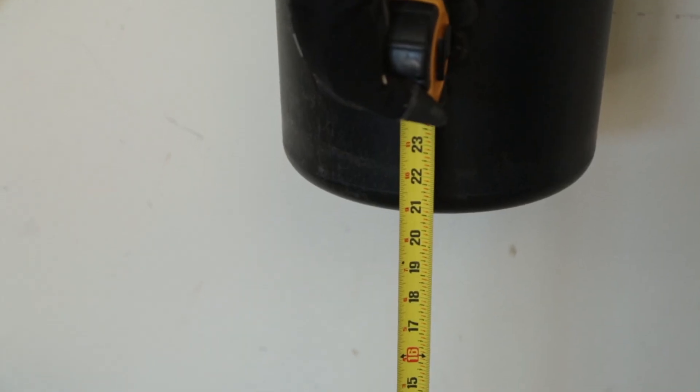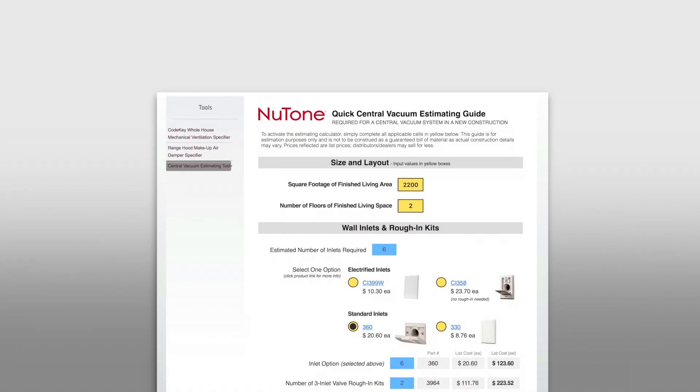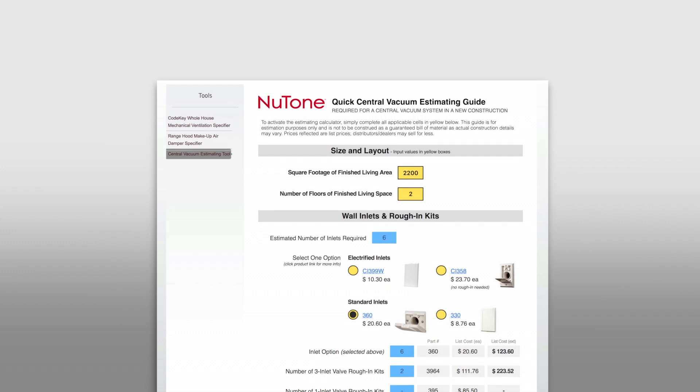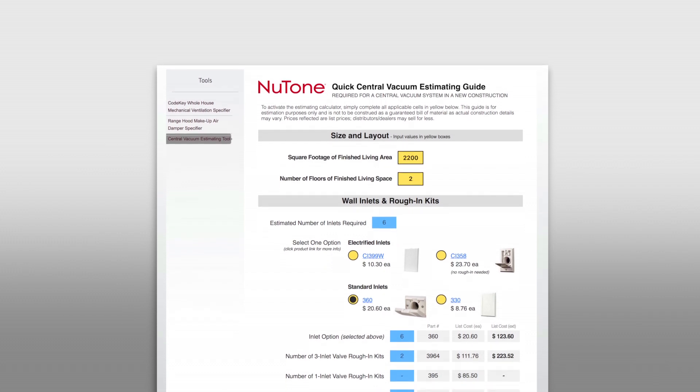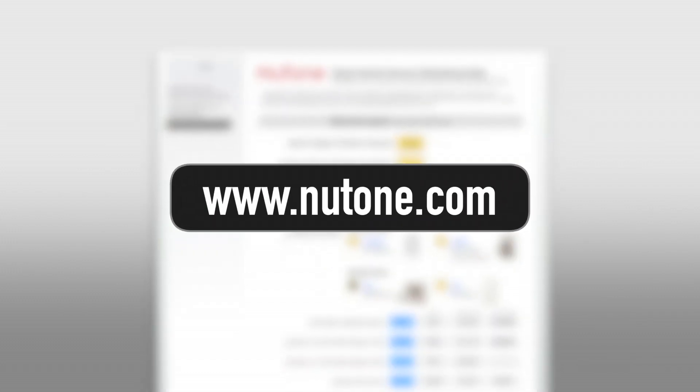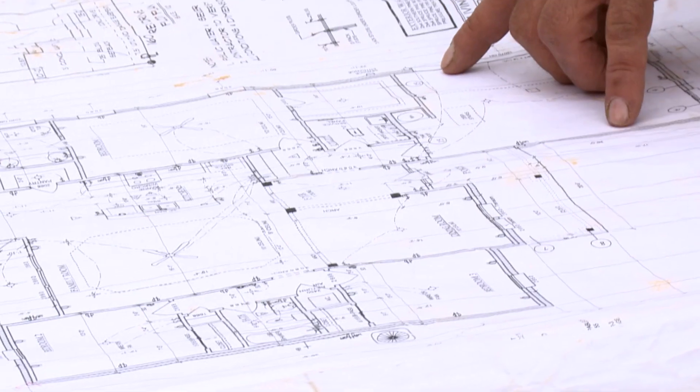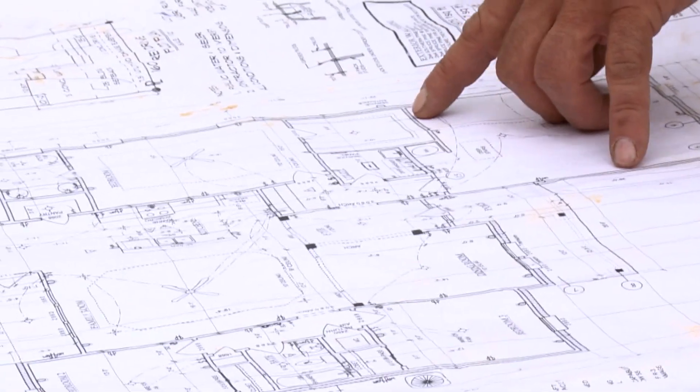Estimate the number of inlets and feet of piping required for your home by using the central vacuum estimator tool on NuTone.com. You can also refer to the floor plan of your home to accurately determine the quantity of materials needed.